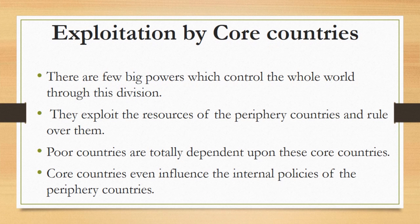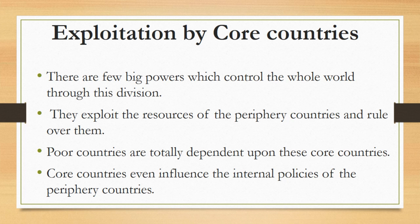After studying all three divisions existing in the world system, we can understand how core countries are ruling the whole world by fully exploiting the periphery countries and partially exploiting the semi-periphery countries. There are a few big powers which control the whole world through this division. They exploit the resources of the periphery countries and rule over them. Resultantly, the poor countries are totally dependent upon these core countries, and core countries even influence their internal policies. Now we will do the gender analysis of this theory.